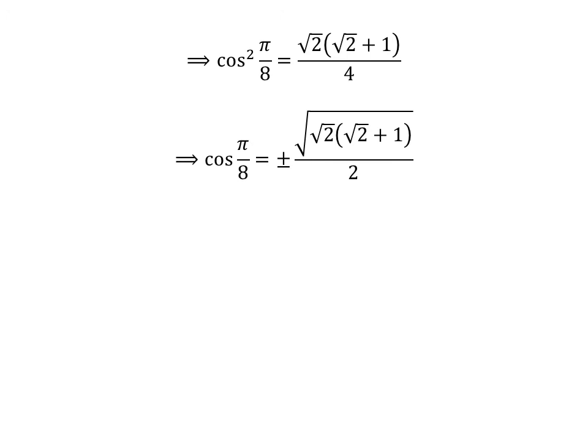This gives cos²(π/8) = √2(√2 + 1)/4. Taking the square root: cos(π/8) = ±√[√2(√2 + 1)]/2.